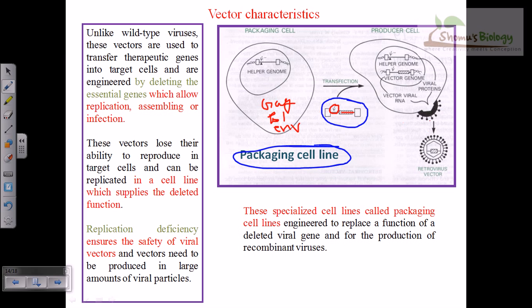The viral gene sequence with our insert of interest provides the signal for packaging, while the helper genome provides the proteins for packaging. Working together, they produce a fully functional virus, except excluding the capacity of replicating inside the host cell. This replication deficiency ensures the safety of viral vectors. These specialized cell lines are called packaging cell lines — engineered to replace the function of a deleted viral gene for the production of recombinant viruses.